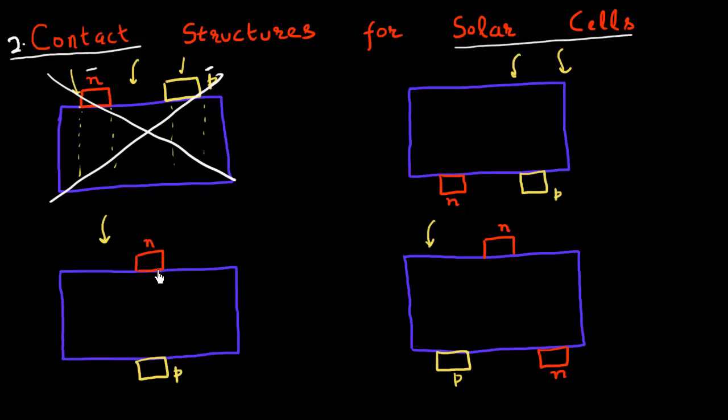Now my choices are reduced to these three. The other scheme, which is very prevalent and found in majority of the cells available in market today, is that you have one contact facing the sunlight causing some shading, and the other contact at the back.